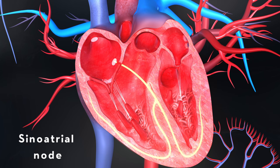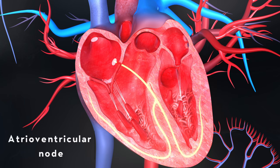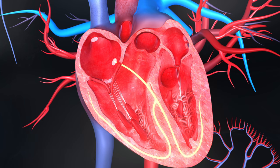The SA node generates electrical impulses that spread through the atria, causing them to contract. The impulses then reach the atrioventricular node, also known as the AV node, which serves as a relay station, allowing time for the atria to fully contract before the ventricles contract. From there, the impulses travel through the bundle of His, bundle branches, and Purkinje fibers, ultimately causing the ventricles to contract in a coordinated manner.